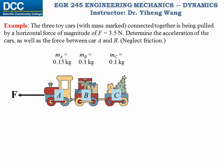Let's look at this example. There are three toy cars, the mass of each is given, and they are connected together, and they are being pulled by a horizontal force with a magnitude of 3.5 newton.